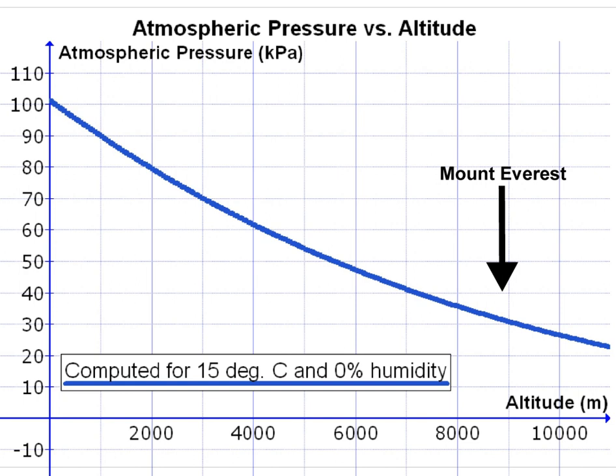Similarly, the dead space is filled with alveolar air at the end of exhalation, and is the first air to breathe back into the alveoli before any fresh air reaches the alveoli during inhalation. The dead space volume of a typical adult human is about 150 mL.